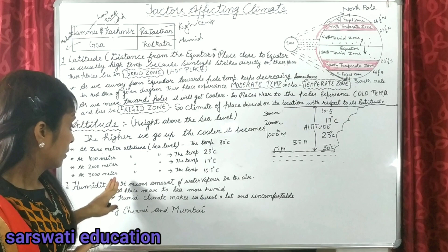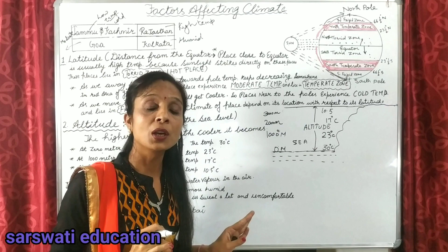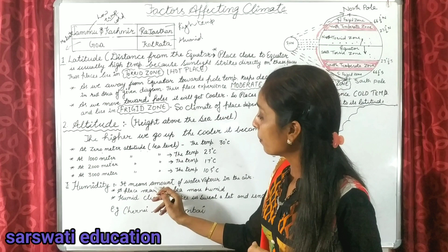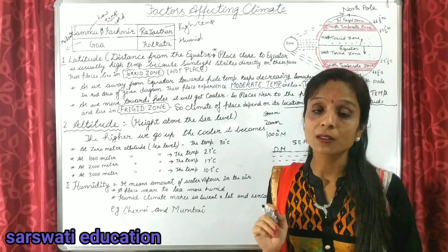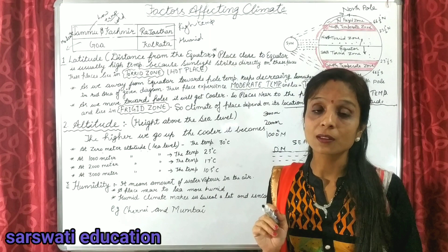The next factor that affects our climate is humidity. Humidity is the amount of water vapor present in the air. Places that are near to the sea have more humidity.